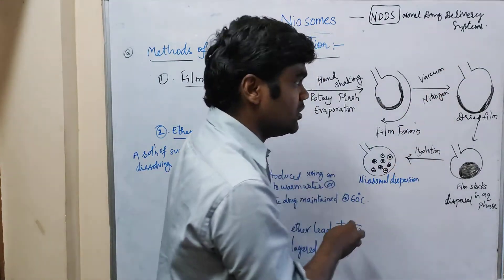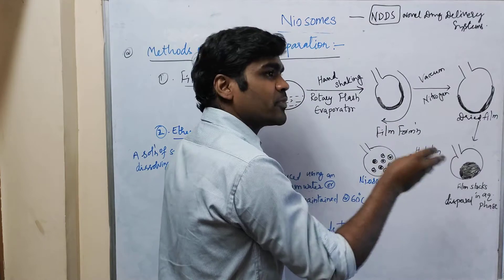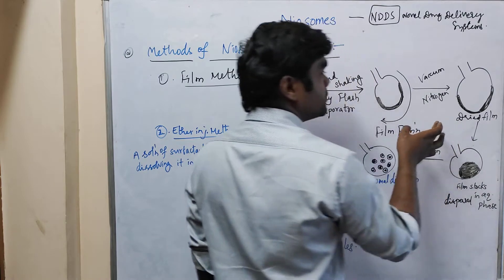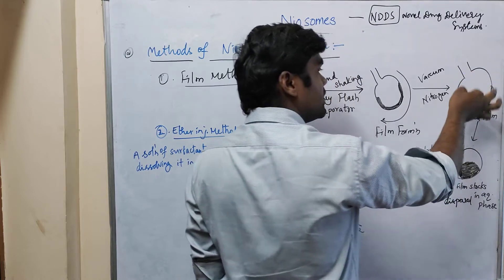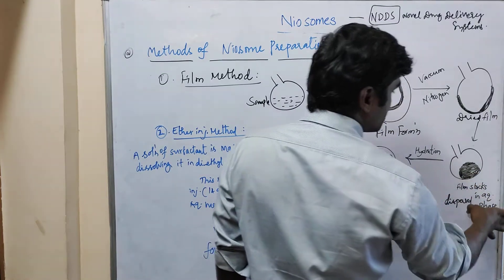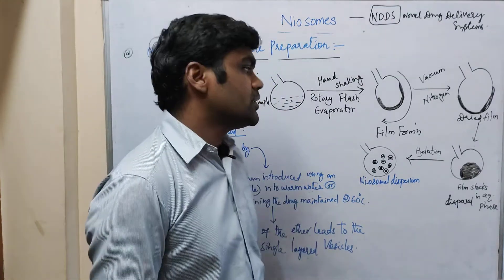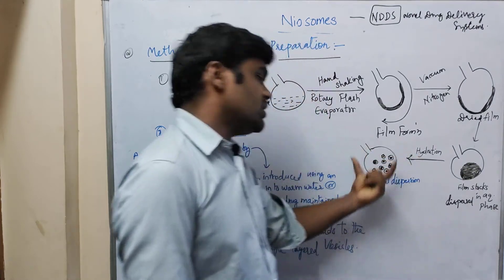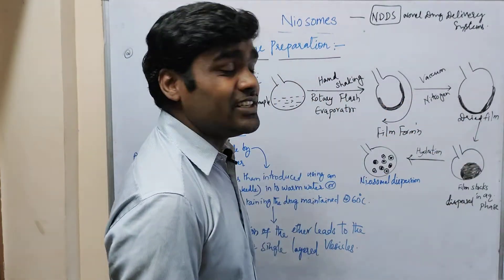The formation of film can be seen at this step. We need to introduce a nitrogen vacuum into whatever film has formed in the round bottom flask. Finally, after the vacuum and nitrogen are introduced, the dried film forms in the round bottom flask. The film then stacks in the aqueous dispersal phase, and we perform the hydration process to get the neosomal dispersion.